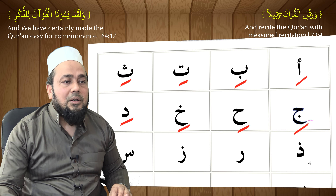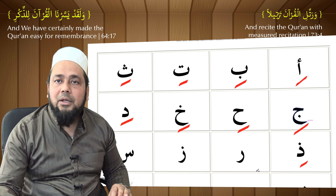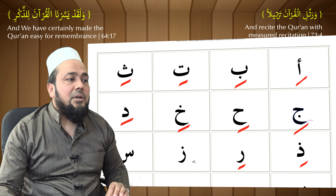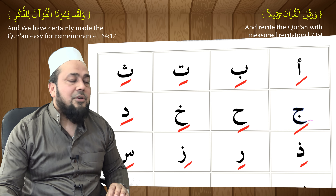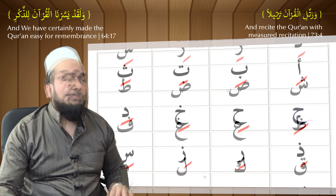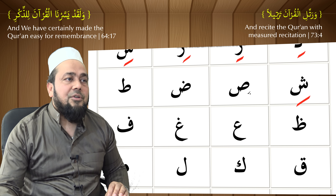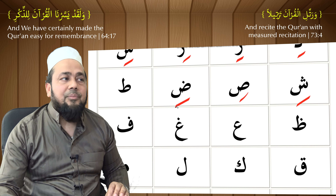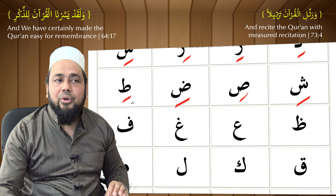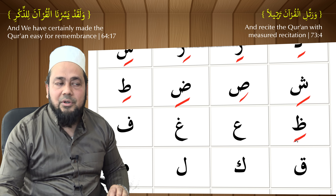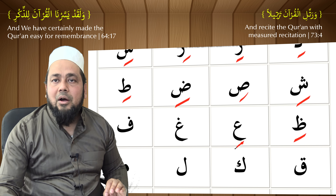Dal kasra — 'di'. Ra kasra — 'ri'. Zay kasra — 'zi'. Sin kasra — 'si'. Shin kasra — 'shi'. Saad kasra — 'si'. Daad kasra — 'di'. Ta kasra — 'ti'. Za kasra — 'ji', 'gi'.